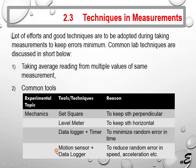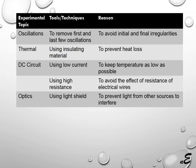A motion sensor is usually used to read the position of moving objects and can take thousands of data points per second, so a data logger is needed to record this data accurately. In oscillation-type experiments, we usually remove the first few and last few oscillations because when oscillations start and stop, there are some irregularities. To avoid these irregularities, we remove the first and last oscillations.